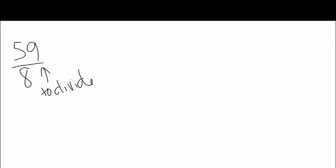When we want to convert an improper fraction to a mixed number, we're going to divide our fraction. We're going to take 59 and divide it by 8. I'm going to rewrite this problem as a division problem, 59 divided by 8, and you're going to want to do this longhand.